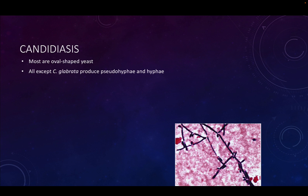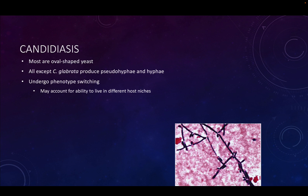The majority of Candida species are seen as oval-shaped yeast. However, they can produce hyphae and pseudohyphae — except for one particular species that can't produce those, but the rest can. We call this phenotype switching: they can switch from a hyphal form, which is almost like the mold-like form, to the yeast form. That may be part of what allows Candida to be very successful in colonizing lots of different parts of the host.